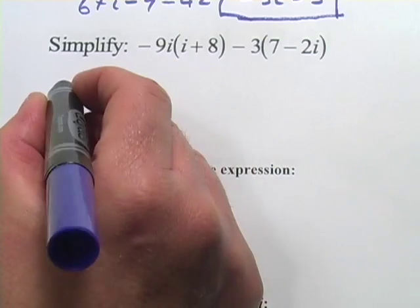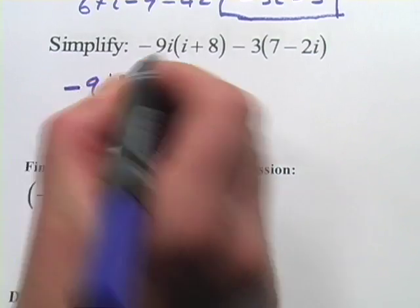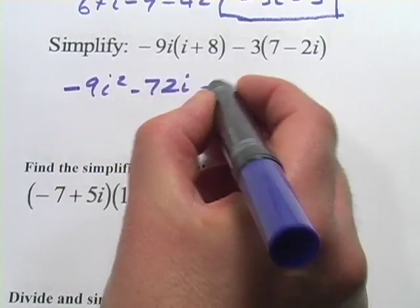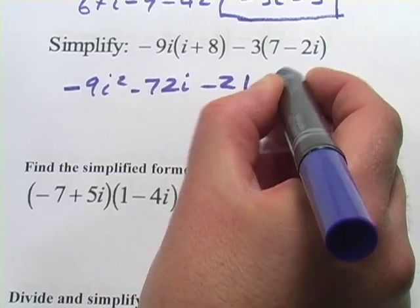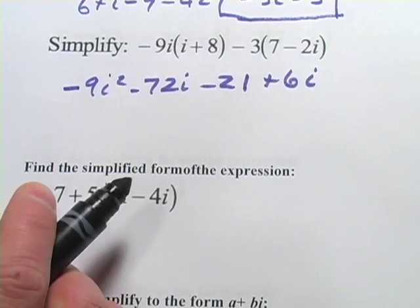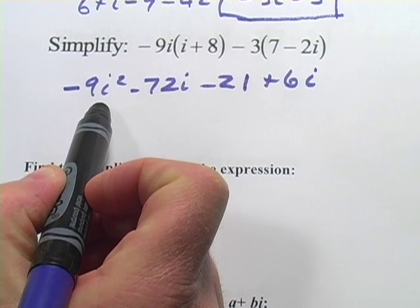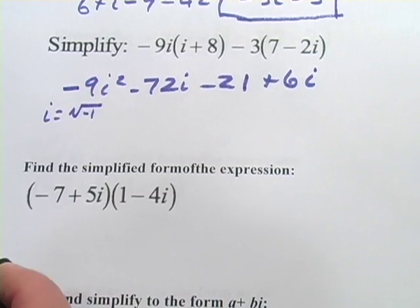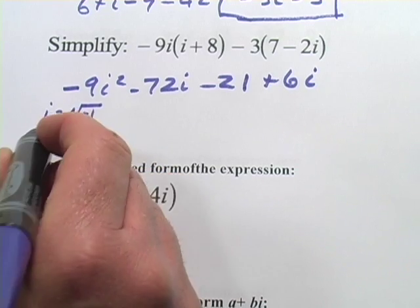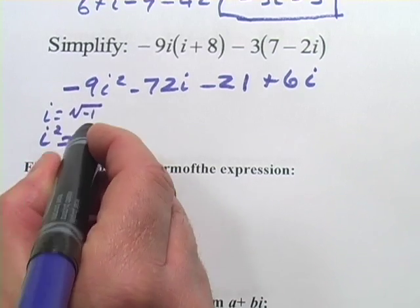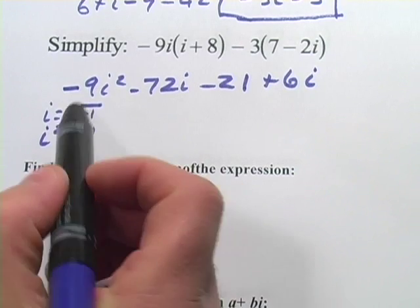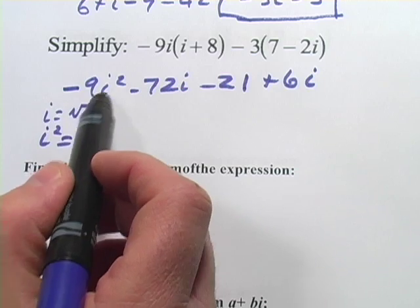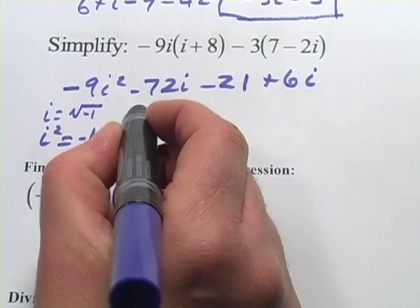Let's go ahead and do the distribution. -9i times i is -9i². -9i times 8 is -72i. Then we have -21 and +6i. Now the trick with the i squared, remember, i equals the square root of negative 1. If you were to square this, i² would equal -1, which is kind of handy here because it makes things a lot simpler. So -9i² is really -9 times -1, or a positive 9.